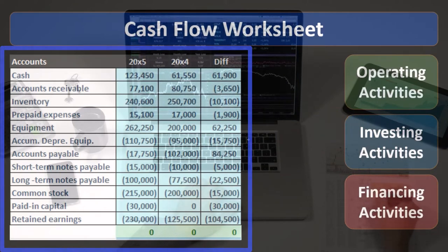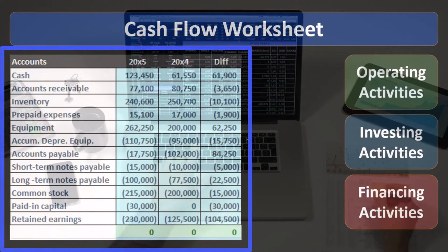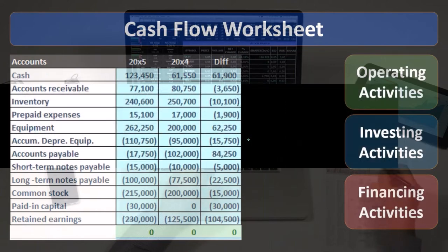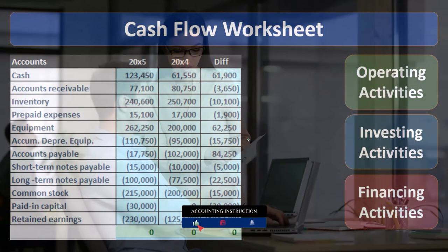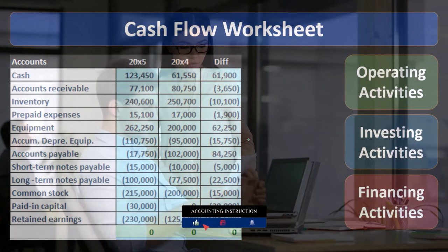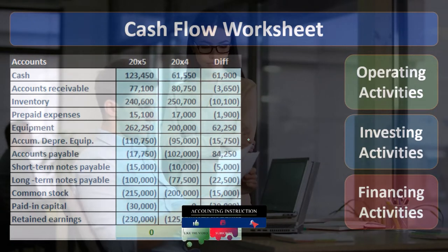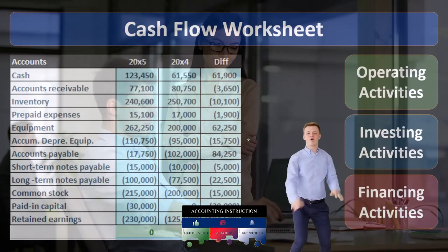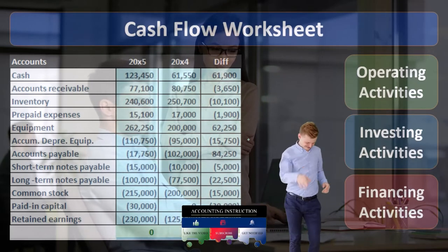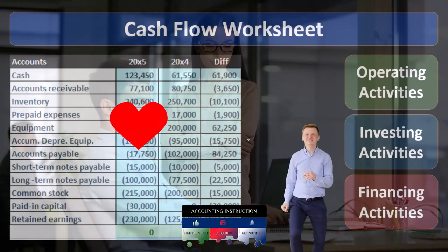Not too much activity should be in the equipment account — we should only purchase a few things, not every day. The same applies for accumulated depreciation. If the change in accumulated depreciation happens to not match what is on the income statement for depreciation expense, we can go to the income statement and verify: is it equal to this change in accumulated depreciation? If it is, fine — we'll use that number. If it's not, then we go into the GL and ask: was there a sale of equipment or something else that's going to require us to do something different?